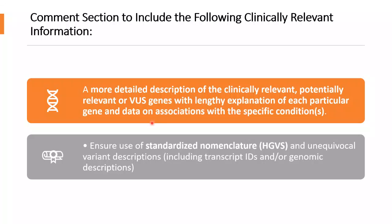In the comments section, you should give a more detailed description of the clinically relevant, potentially relevant, or VUS genes with a lengthy explanation of each particular gene, data, and association with specific conditions if available. Ensure use of standardized HGVS nomenclature and unequivocal variant descriptions like transcript IDs or genomic descriptions with appropriate reference IDs.